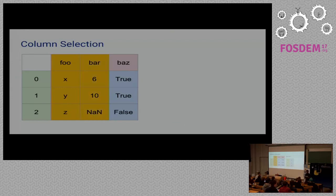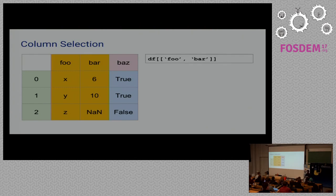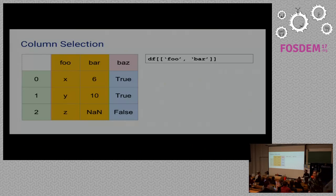Indices by default will always be 0, 1, and 2. Similarly, if you want to select multiple columns, you can simply pass a list of the names of the columns that you want to fetch.